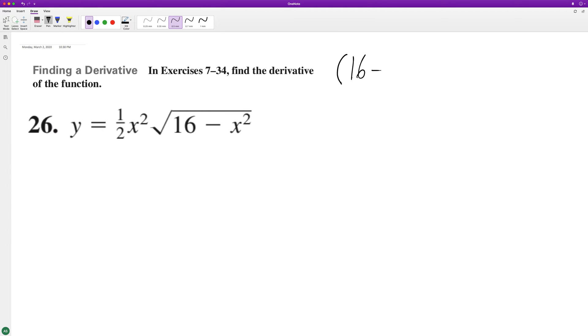So we'll have 16 minus x squared raised to the 1 half. Just rewrite it like that. Should have done that down here.